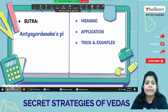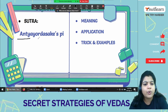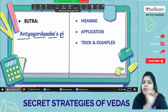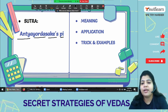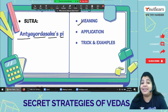Today's sutra is, the name is little bit difficult. Antyayordasakepi. You know daske, das means 10, so it's somewhat related to that. In this session, we are going to see again meaning, application, trick and examples.